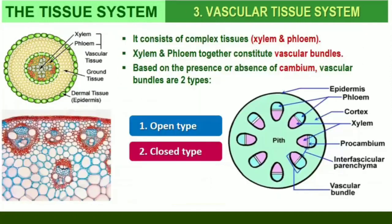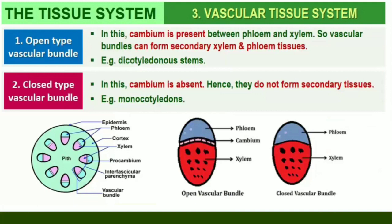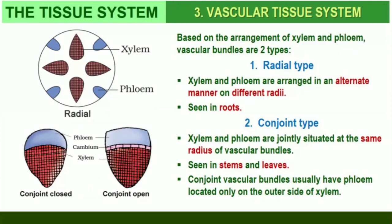The vascular tissue system consists of complex tissues — the phloem and the xylem. The xylem and phloem together constitute vascular bundles. In dicotyledonous stems, cambium is present between phloem and xylem. Such vascular bundles, because of the presence of cambium, possess the ability to form secondary xylem and phloem tissues, and hence are called open vascular bundles. In monocotyledons, the vascular bundles have no cambium and do not form secondary tissues; they are referred to as closed. When xylem and phloem within a vascular bundle are arranged alternately on different radii, the arrangement is called radial, as in roots. In conjoint type of vascular bundles, the xylem and phloem are situated at the same radius. Such vascular bundles are common in stems and leaves, and usually have the phloem located only on the outer side of xylem.